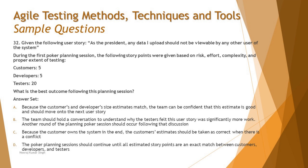Looking at the options for question 32. Option A says: because the customer's and developer's estimates match, the team can be confident the estimate is good and should move on to the next story. You cannot discriminate against a team member — just because two people match doesn't mean you ignore the tester. The QA team is also contributing, and if they think testing will take longer effort, you must talk to them. The team is always a team. Option A is totally irrelevant.